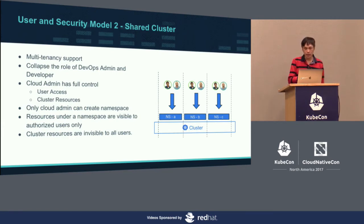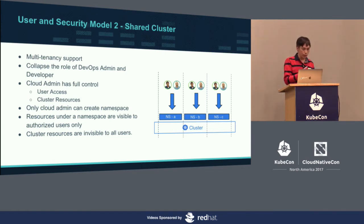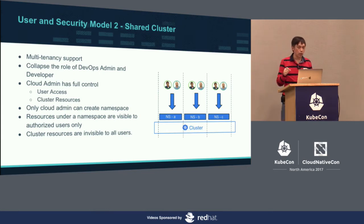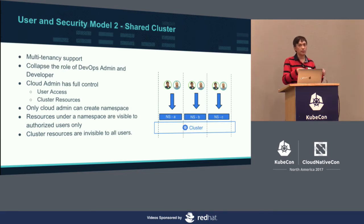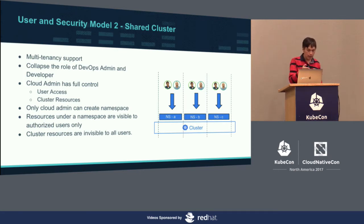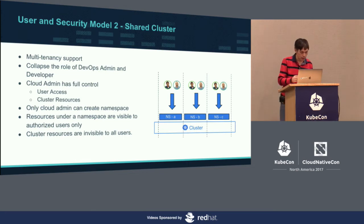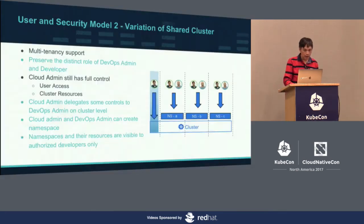The Shared Cluster model is really designed to support multi-tenancy within the cluster. In this simplified model, the DevOps admin and developer roles are collapsed. We assign users within a namespace—we use namespaces to isolate what users can do and what resources they can see. They are just developers and cannot see cluster-level resources. What each column represents is a different set of development teams that can use different sets of namespaces, but cannot see each other's namespaces.